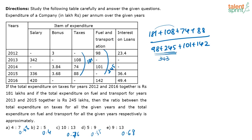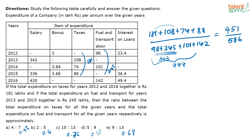For the numerator: 181 plus 108 — take 181, plus 100 is 281, plus 8 is 289. Then 289 plus 74 plus 88. You will get 451 as the numerator. So you have 451 divided by 586. Now I am going to approximate this — I take it as 450 and 585.